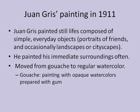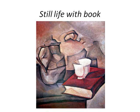In 1911, Gris started to paint in the Cubist art movement. Gris's subject matter was usually his immediate surroundings. He produced still lifes composed of simple everyday objects, portraits of friends, and occasionally landscapes or cityscapes. He also moved from gouache — painting with opaque watercolors prepared with gum — to regular watercolor at this time.